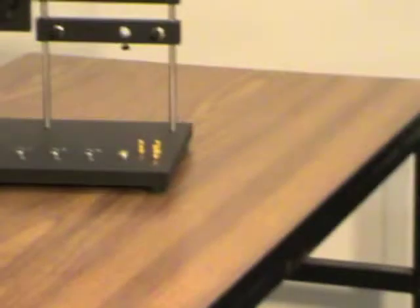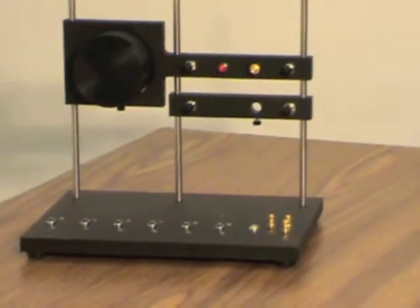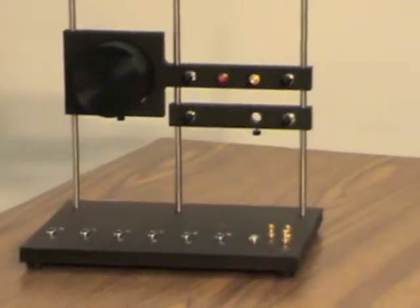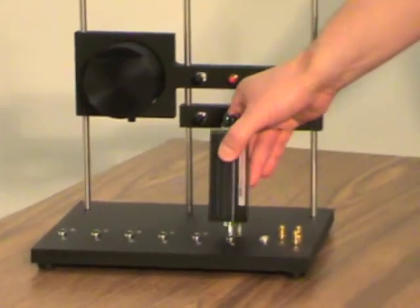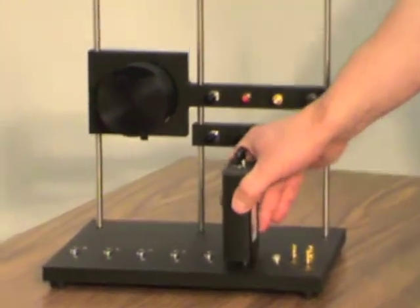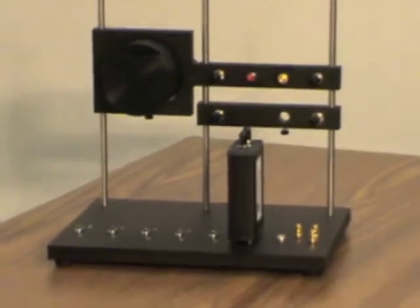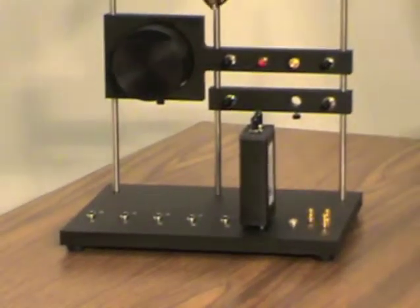The large Pelican case contains the test probes, the cables, and the optical interface stand. The main LT base unit comes in its own separate Pelican case, and the alignment stands are packaged separately. We are now inserting the probes in the optical interface stand.